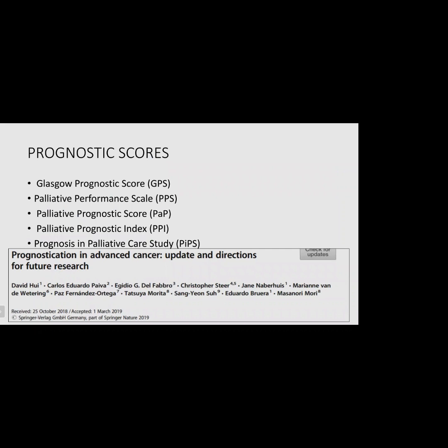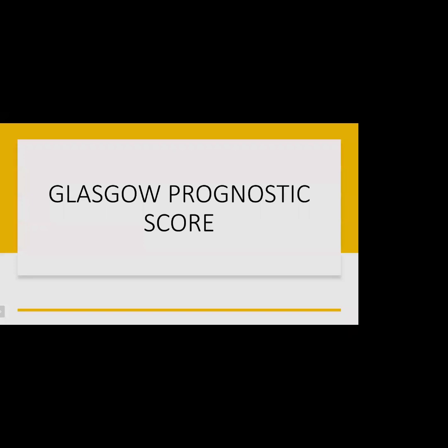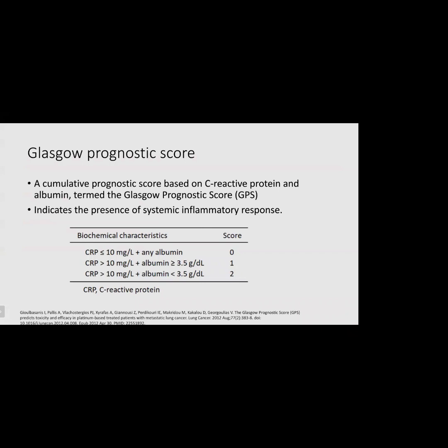The prognostic tools discussed in recent updates on prognostication in advanced cancer are: Glasgow prognostic score, palliative performance scale, palliative prognostic score, palliative prognostic index, and prognosis and palliative care study. The Glasgow prognostic score is a cumulative prognostic score based on C-reactive protein and albumin levels. A CRP ≤10 gives a score of 0; CRP >10 with albumin ≥3.5 gives a score of 1; CRP >10 with albumin <3.5 gives a score of 2. With increasing score, there is worsening prognosis. It was first proposed in unresectable lung cancer and validated in different cancer types.